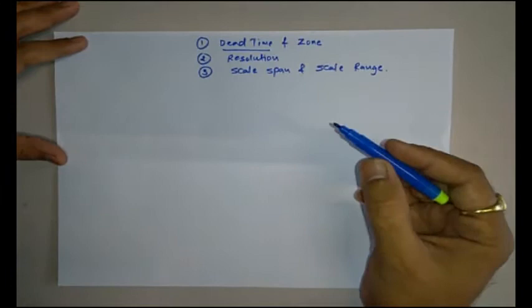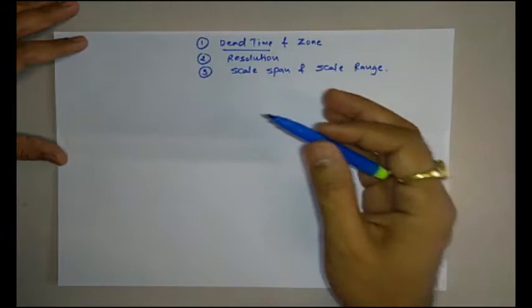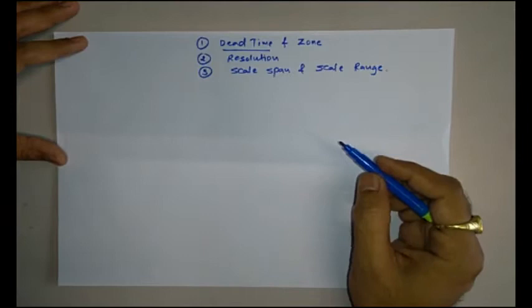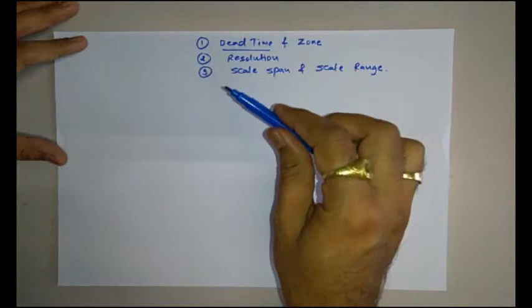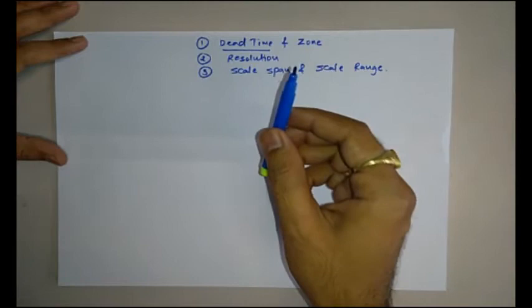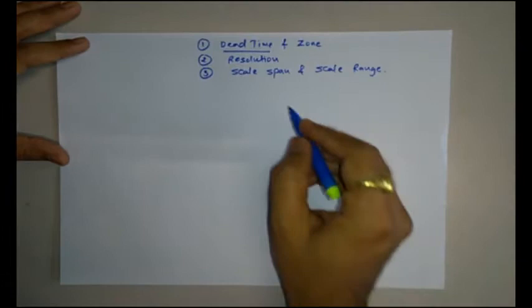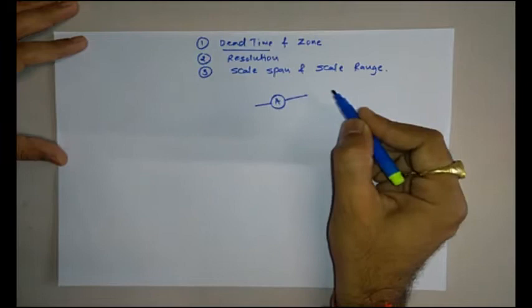What is dead time? Dead time is nothing but the time taken by an instrument to move its pointer from its initial position once it is excited by some input quantity. In other words, it is the time lag or time delay before the instrument responds to a known input quantity.